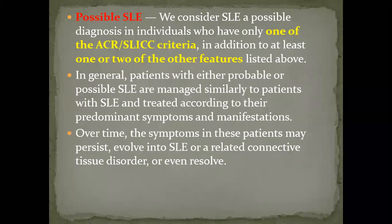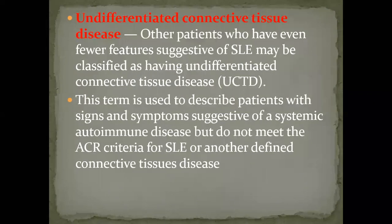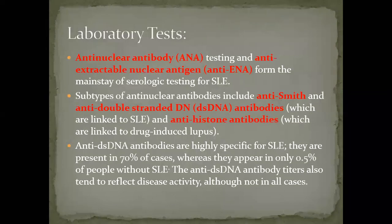Patients with possible lupus need further follow-up — with time, more criteria may appear or they may even resolve. There is also the entity of undifferentiated connective tissue disease, which does not meet criteria for SLE and may evolve into another form of connective tissue disease.